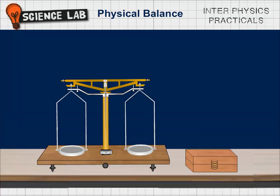A physical balance has a metallic beam, two pans, a knife pointer. Physical balance is moved out of the glass box for the sake of convenience.